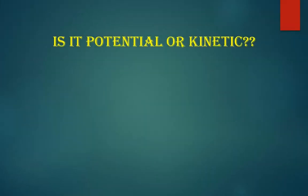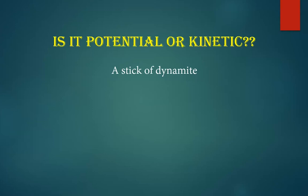Energy can be either potential or kinetic, but sometimes an object can have both. On your quizzes and exams, if both are present, you'll need to decide which one is more abundant. Consider a stick of dynamite — it's an explosive with a lot of chemical potential energy. If that stick of dynamite were thrown through the air, it still has its potential energy but also some kinetic energy. If it hit the wall and didn't blow up, it might make a little dent. But if it hit the wall and blew up, it would blow the entire wall down. So the chemical potential energy is clearly much greater than the little bit of kinetic energy it has flying through the air.